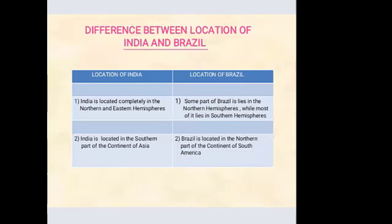We also studied the difference between the locations of Brazil and India. India is located completely in the northern and eastern hemisphere. For Brazil, some part lies in the northern hemisphere while most of it lies in the southern hemisphere. India is located in the southern part of the Asian continent, while Brazil is located in the northern part of the South American continent.